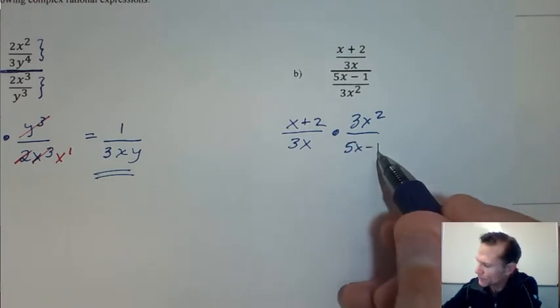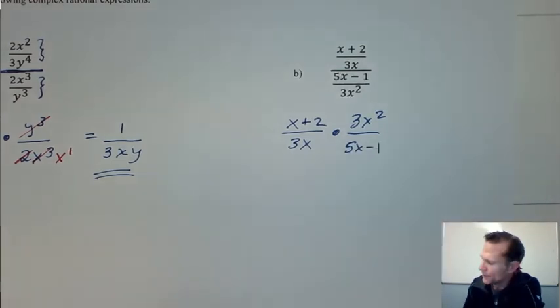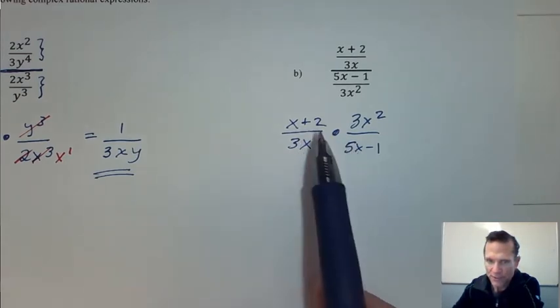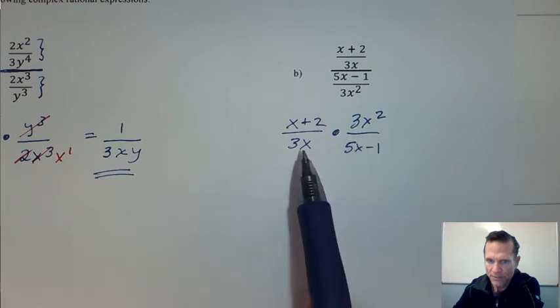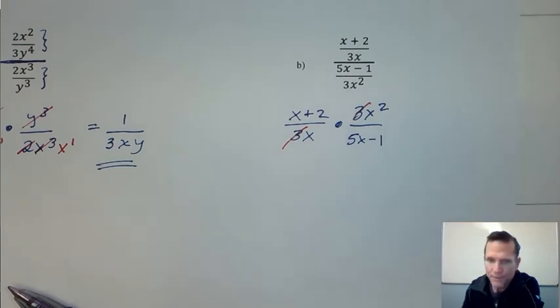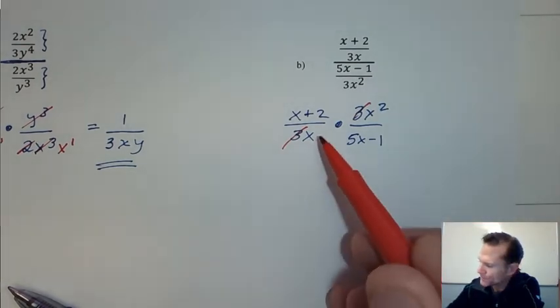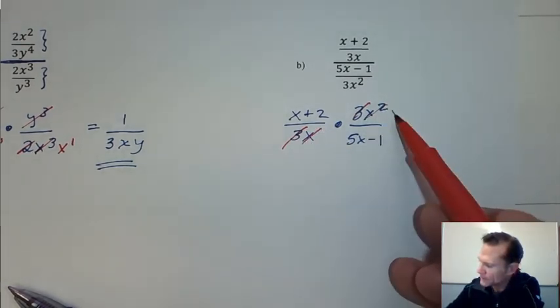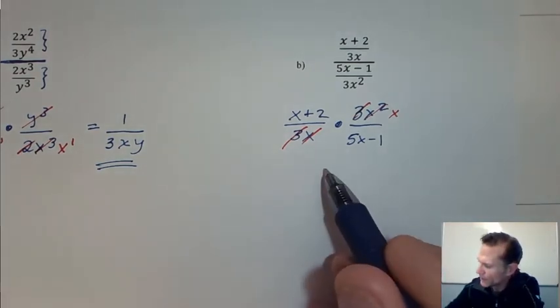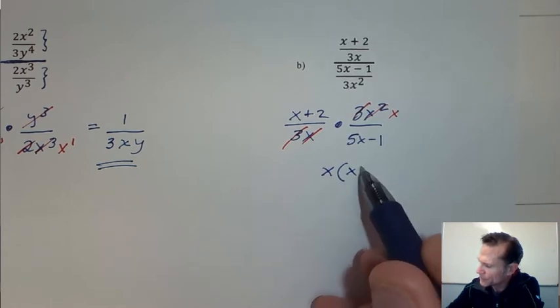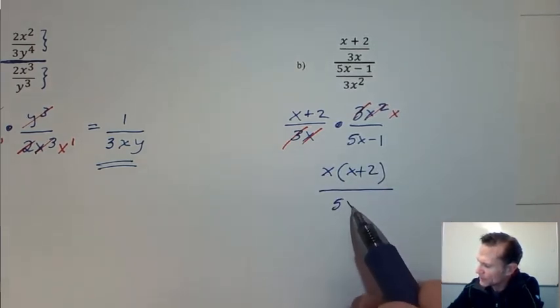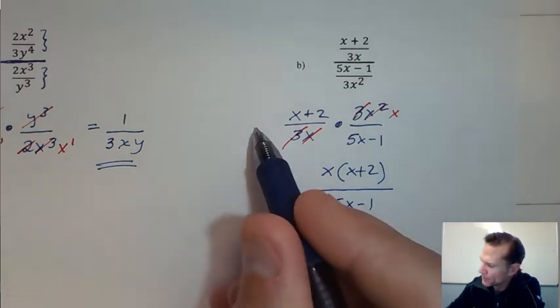I flip the second fraction or write the reciprocal, then I'm going to look for cross canceling. Make sure everything's factored. There's nothing that will cancel out, look for factoring or reducing. The three cancels, the x cancels and knocks this down to x. What do I have left in the numerator? I have x times (x+2) and then 5x-1.